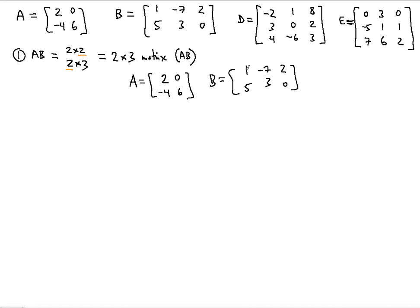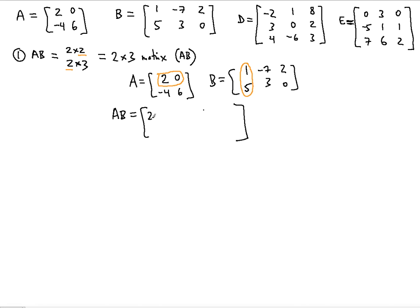Since we're finding the first row, first column entry, we use the first row of matrix A and the first column of matrix B. That gives us the number in the first row, first column position of the resulting 2 by 3 matrix. So AB starts with: 2 times 1 plus 0 times 5.